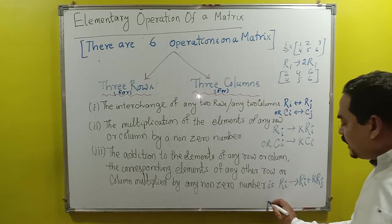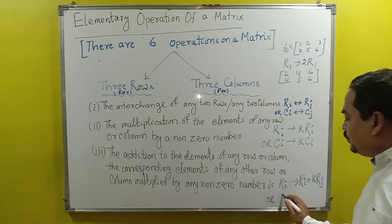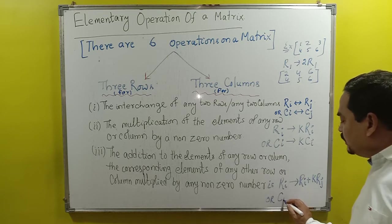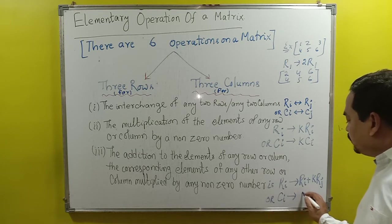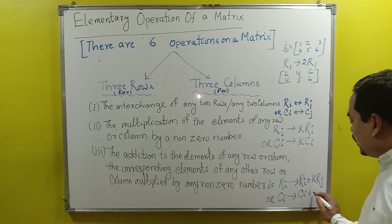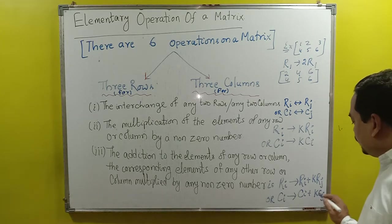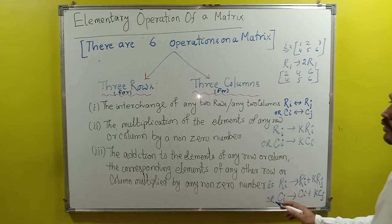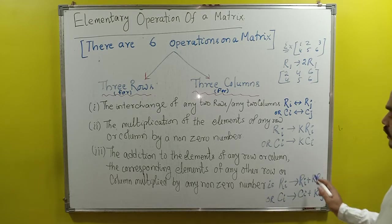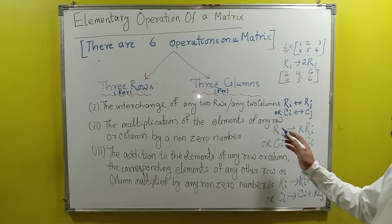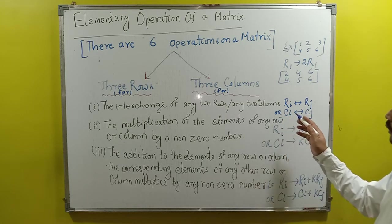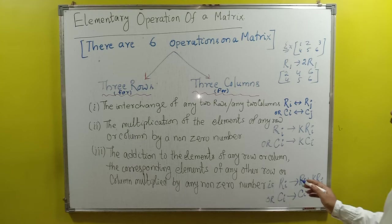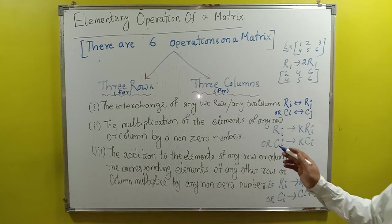In the same way, it can be applicable to columns: C_i is replaced by C_i + K·C_j. These are the 6 operations — 3 for rows, 3 for columns.